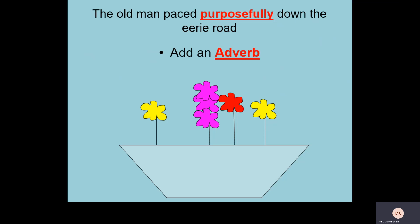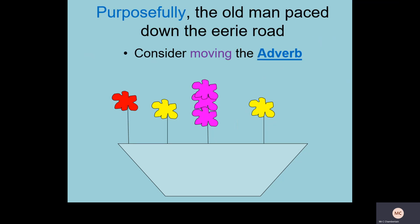The next focus is on the verb again — I'm looking to describe it with an adverb. So we get: 'the old man paced purposely down the eerie road.' I like to call this particular flower the rose. I also want to think about where I might place that adverb in the sentence. Trying it at the front gives: 'purposely, the old man paced down the eerie road.' I quite like using adverbs at the front of sentences because it often engages the reader more with what's actually happening.